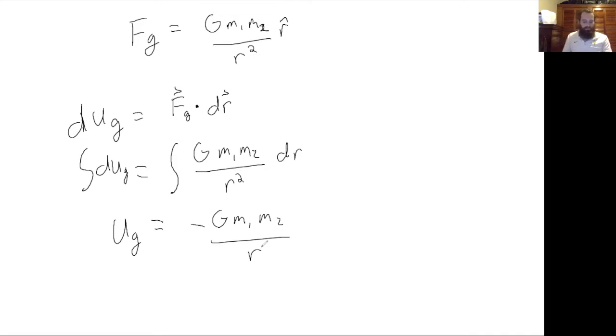So this just becomes G m1 m2 over r. Remember that potential energy is a scalar, so there's no direction associated with this. Now we have a force of gravity G m1 m2 over r squared and a potential energy due to gravity minus G m1 m2 over r.